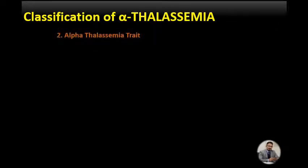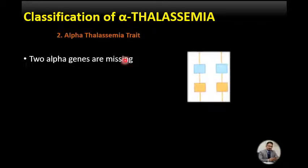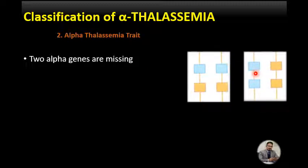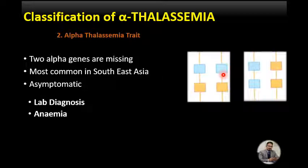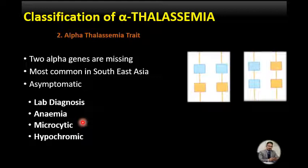Alpha thalassemia trait occurs when two alpha genes are missing. The missing genes may be either on the same chromosome or on the homologous chromosome. This condition is most common in Southeast Asia, West Africa, and the Mediterranean area. It also occurs in about 2% of African Americans. Importantly, alpha thalassemia trait is asymptomatic. Lab diagnosis shows anemia with hemoglobin levels of about 10–12 g/dL.